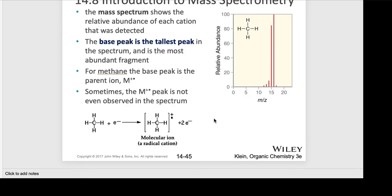On the next slide we have a simple example. The mass spectrum shows the relative abundance, and whichever is the tallest will be called the base peak — always set at 100%. This is for methane, a very simple molecule. We're looking at relative abundance; you can see there's something a bit higher and then something smaller. For methane, the base peak is the parent ion, M or M+•.